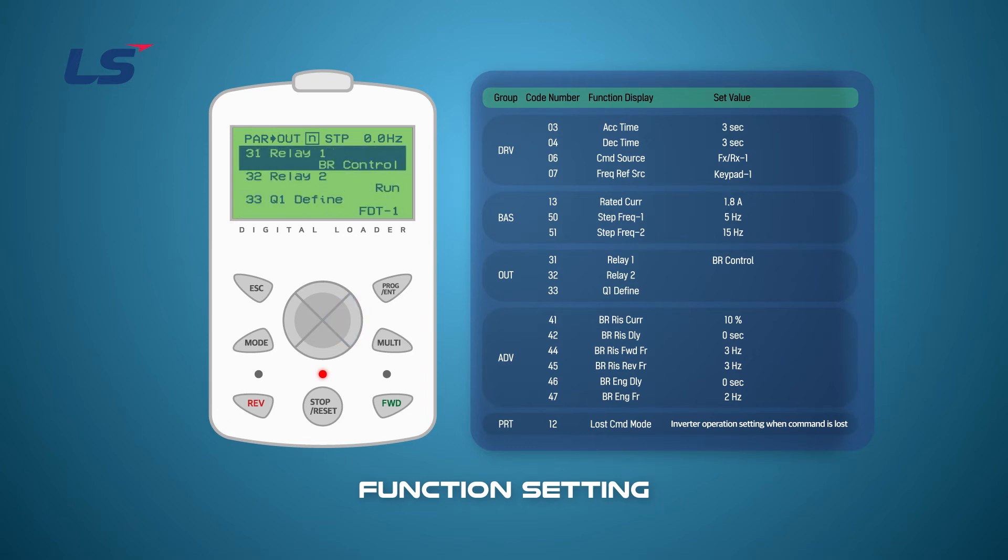Finally, when the run command or frequency command is lost, the operation is set to free run. When a lost command is issued to prevent the lift from falling due to the loss of command, the inverter operates in free run and the brake is closed.